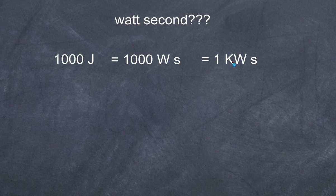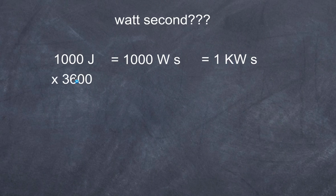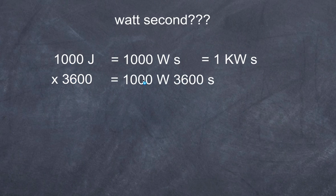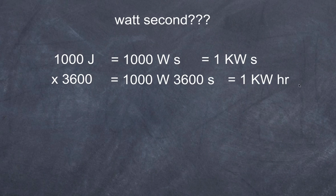Even one kilowatt-second is still too small for electricity companies to charge you with. So instead of one thousand joules in one second, let's multiply by three thousand six hundred — charging not for one joule, not for one thousand joules, but for three point six million joules. Putting three thousand six hundred into the unit, we get one thousand watts for three thousand six hundred seconds. Three thousand six hundred seconds is the same as one hour, so what we now have is one kilowatt-hour.